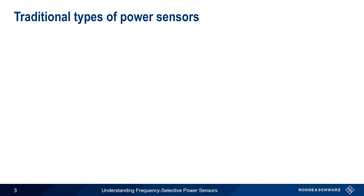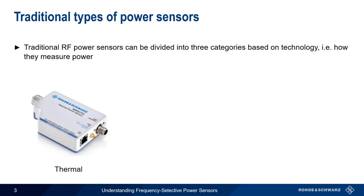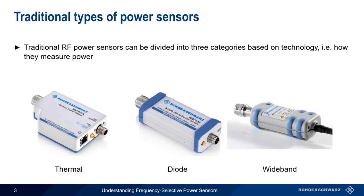Traditional RF power sensors can be divided into three general categories based on their underlying technology — that is, how they measure power. The categories are thermal sensors, diode sensors, and wideband sensors. Each power sensor type has different strengths and weaknesses, and therefore some sensors are better suited for certain applications than others.